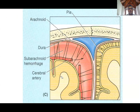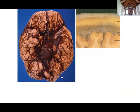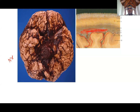In subarachnoid hemorrhage, blood can freely flow through the subarachnoid space since CSF is already present there. Blood will fill the sulci, because the pia mater passes into the sulci. On CT, you can see blood in the sulci as whitish areas on the brain surface — like worms in the sulci. Here you can see blood in the lateral sulcus going through to fill the area outside the insular cortex.